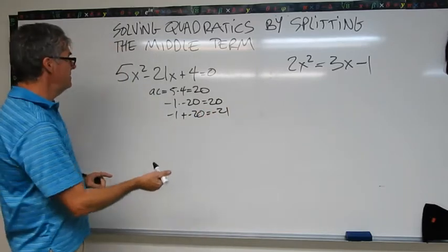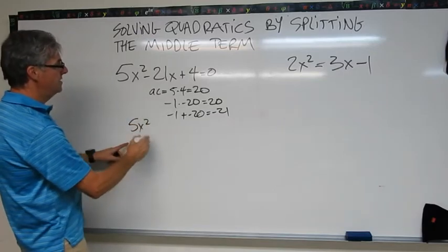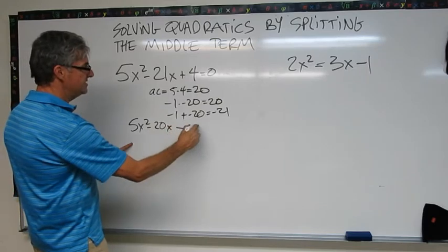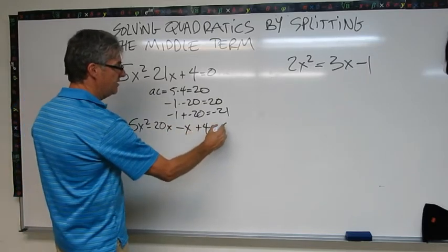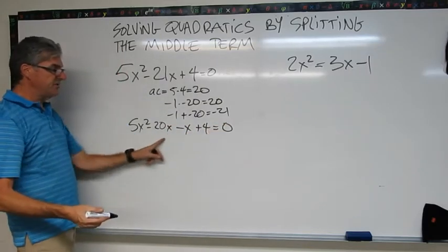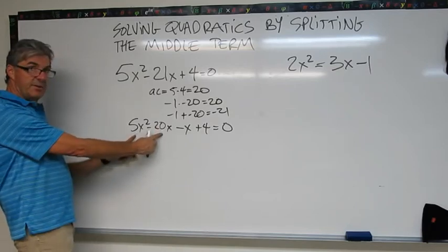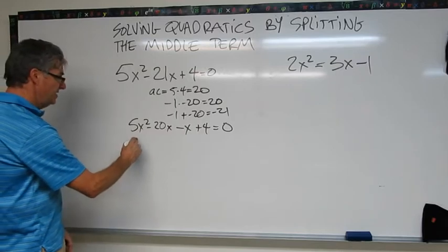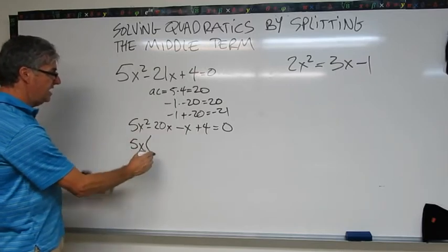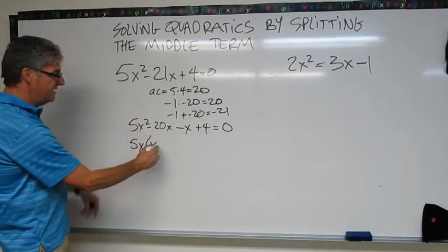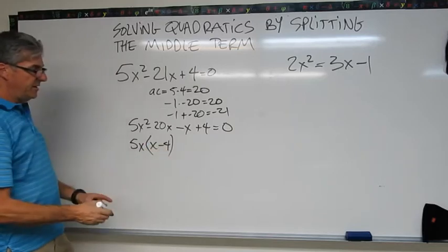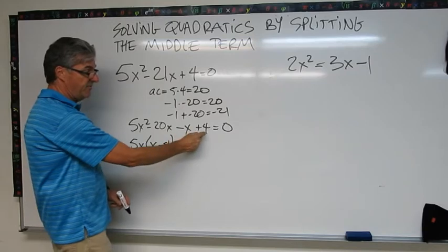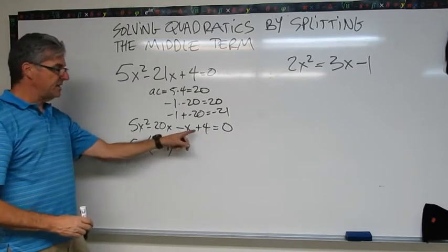So now I can split my middle term. 5x² minus 20x minus x plus 4 equals 0. So I just split my middle term. Now I'm going to look at this one and pull out my greatest common factor. That's going to be 5x. That's in both of these. So 5x times (x minus 4). Now check this out.